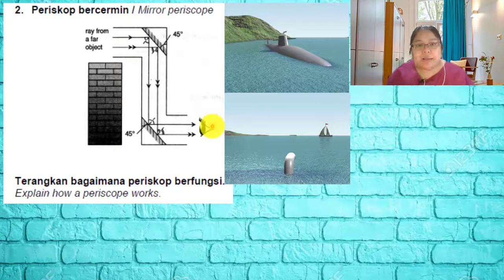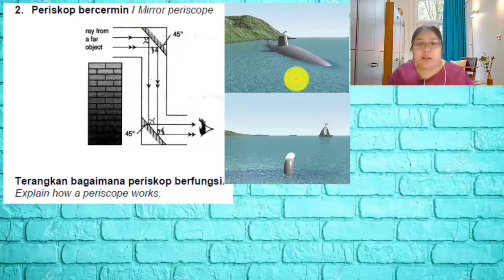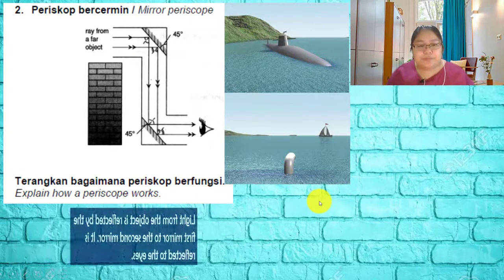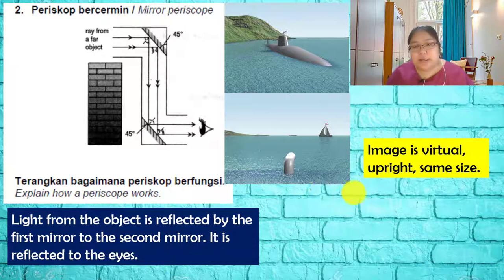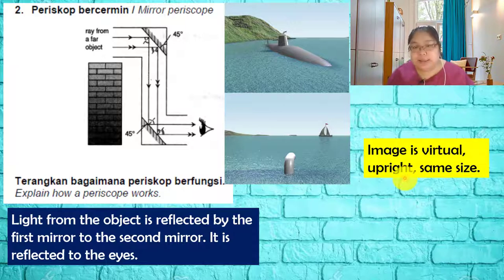The periscope is normally used in submarines to observe what is happening above the sea. Light from the object is reflected by the first mirror, then the second mirror, and finally reaches your eyes. The characteristic of the image formed is virtual, upright, and same size — so the submarine crew sees the object exactly as it is.